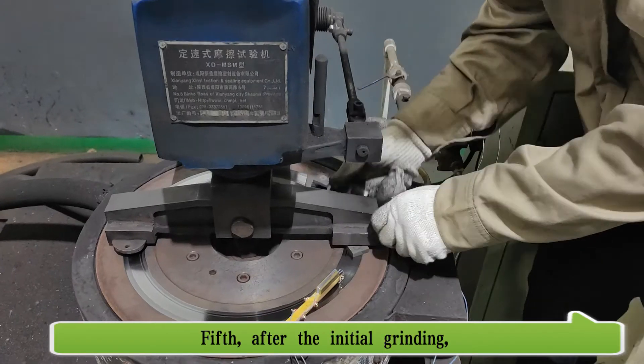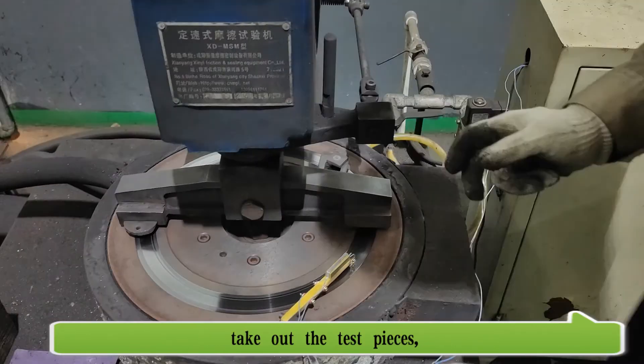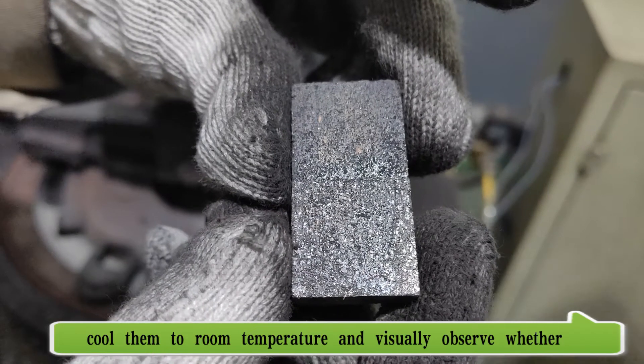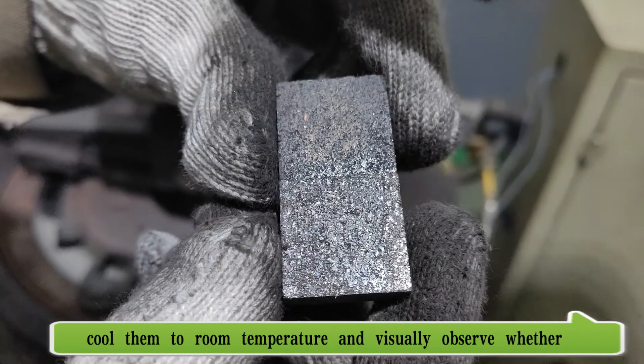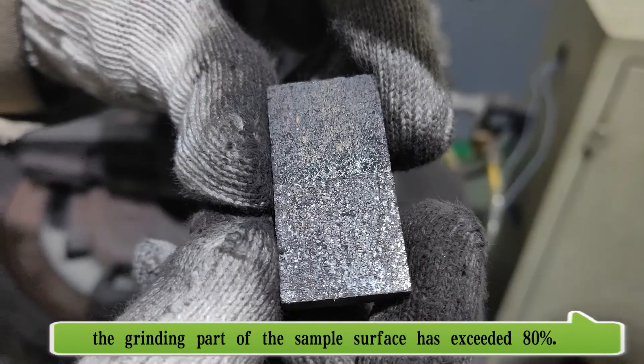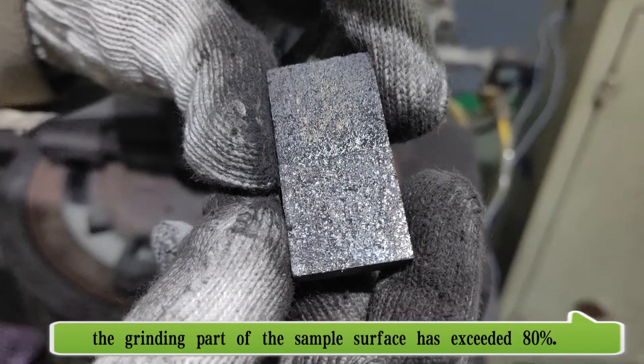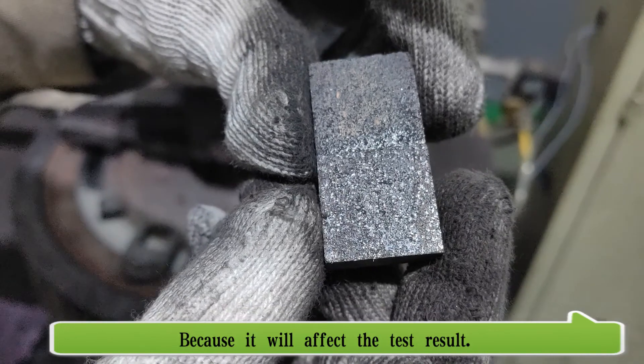Fifth, after the initial grinding, take out the test pieces, cool them to room temperature, and visually observe whether the grinding part of the sample surface has exceeded 80% because it will affect the test result.